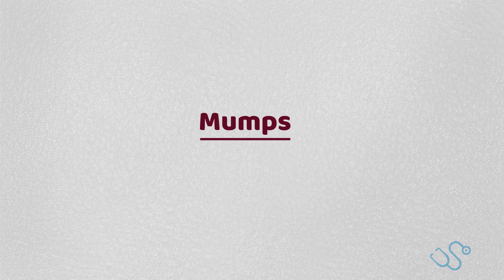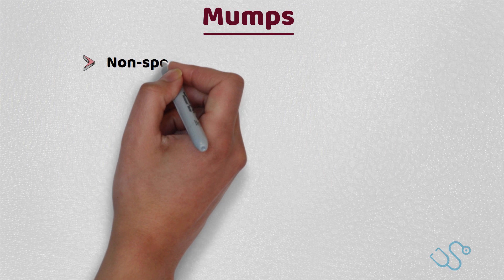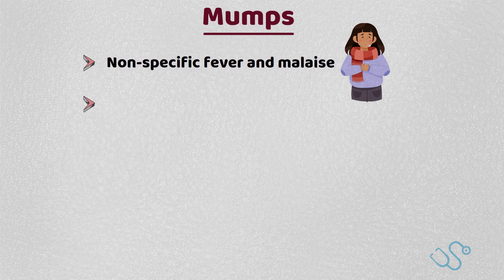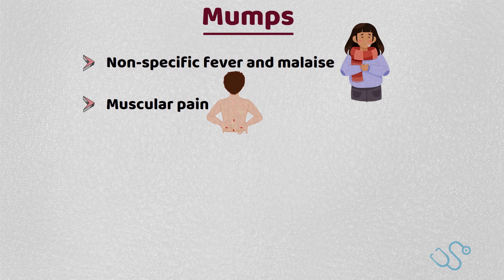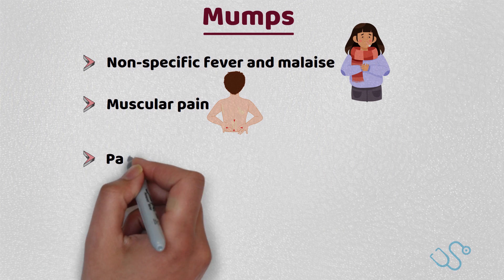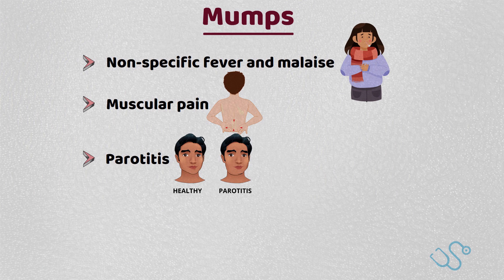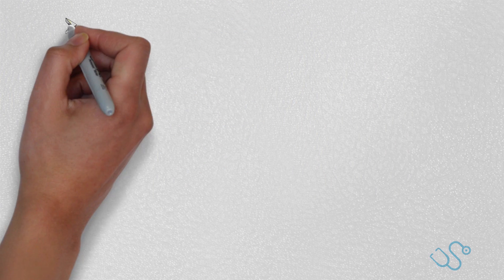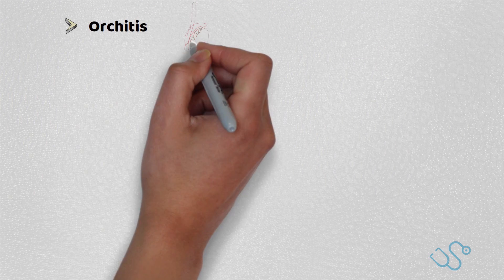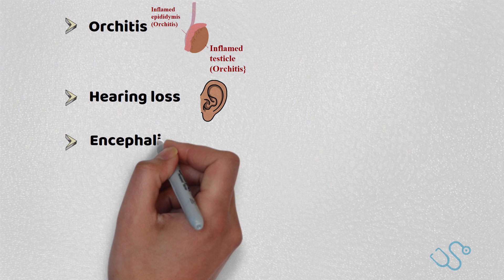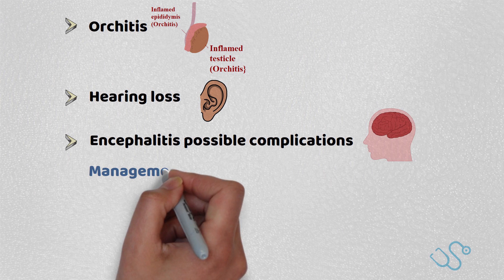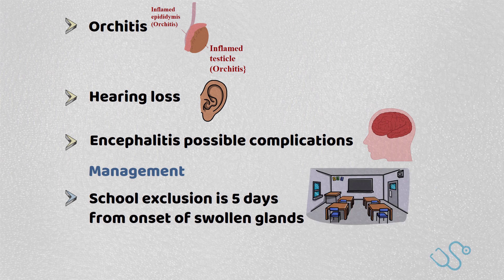Mumps classically presents as a non-specific fever, malaise and associated muscular pain and myalgia. There is common parotitis, which is often a key feature, usually bilateral, with patients complaining of painful eating. Given the poor uptake of MMR, unfortunately there are rising cases, with severe complications including orchitis, hearing loss and encephalitis. School exclusion is five days from the onset of swollen glands.